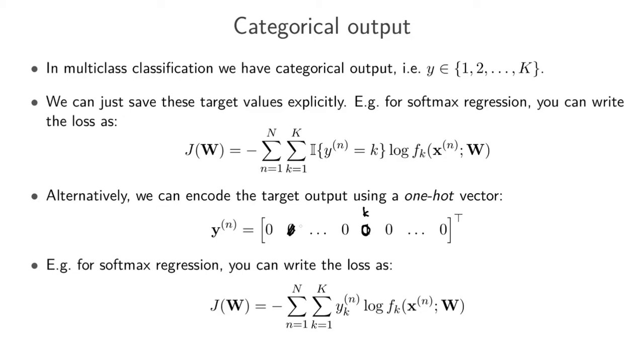Now if we do this then we can write the softmax regression loss in this way, where instead of having this indicator we just have this y_k^n, and this basically cuts out the kth dimension of our one-hot vector. This means this value here will be 1 if x^n belongs to class k, otherwise it will be 0 if x^n doesn't belong to class k. It's basically just a shorthand way of writing the indicator function.